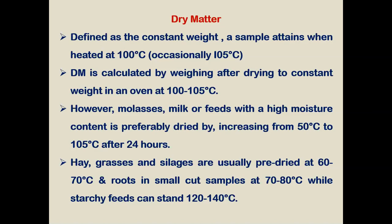However, for samples like milk or feed with high moisture content, which is typically dried by slow increase of temperature — that is, 50 to 105 degrees centigrade — to avoid losses. Particularly in case of hay, grasses, and silage, which are usually pre-dried at 60 to 70 degrees centigrade, and root crops are cut and dried at 70 to 80 degrees centigrade. Starchy feeds can withstand 120 to 140 degrees centigrade.